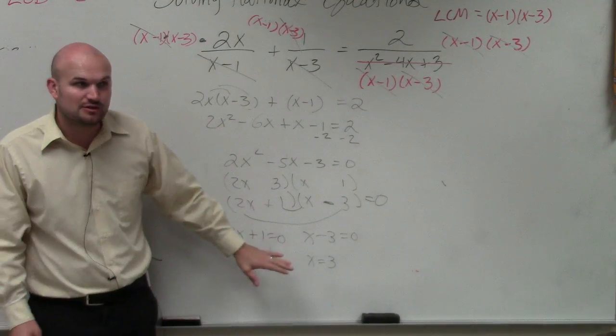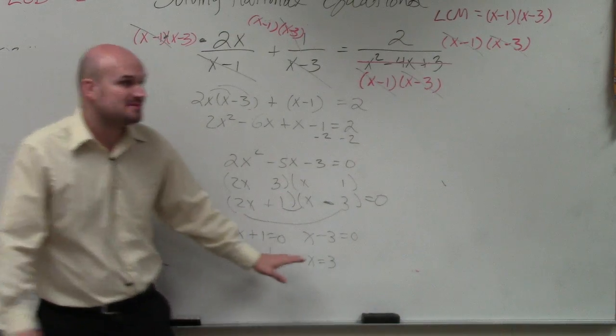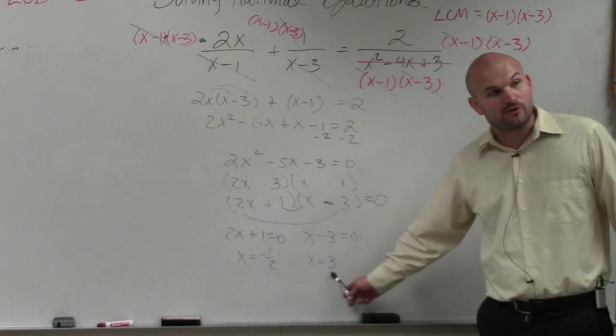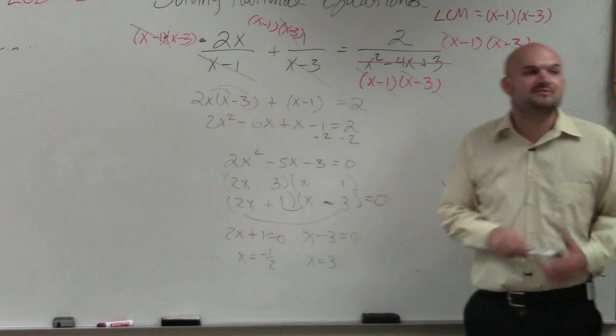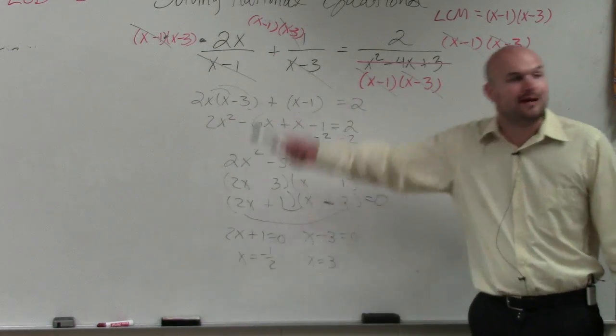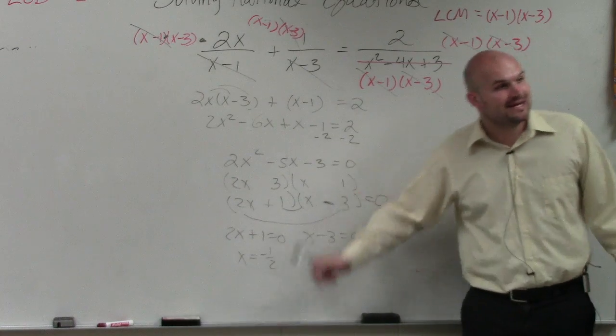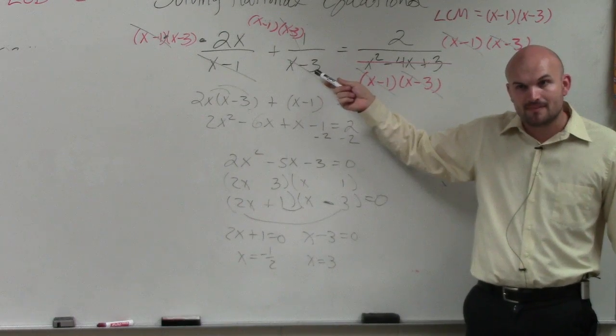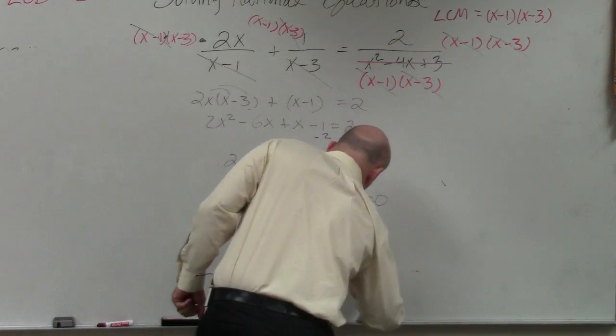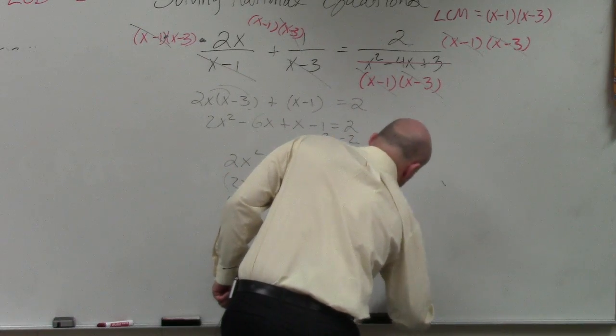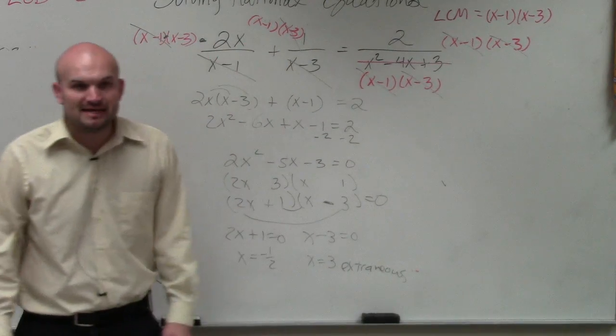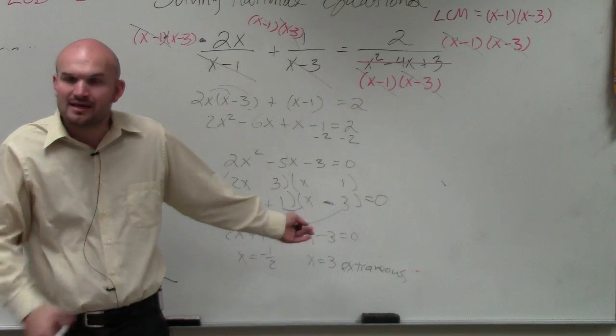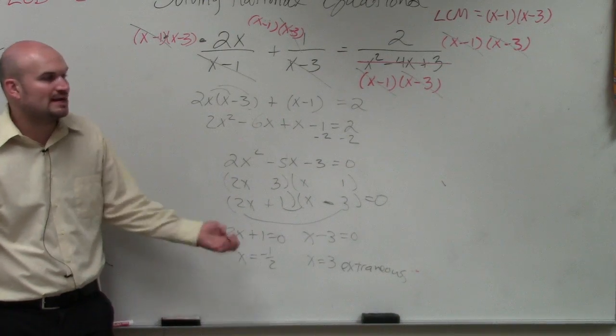So whenever you find your solutions, you have to make sure you go back and take your answers and make sure that they do not make your denominator equal to 0. And guess what? When I take my solution 3 and I plug it back into my equation, you can see that I get the denominator to 0. Right? So therefore, this solution is what we call extraneous. It's not actually a part of the domain. Even though it's a solution, it's not a part of the domain. Right? It's not there. It's not actually a point on the graph.